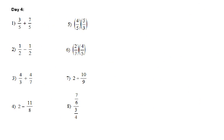Now let's take a look at day 4, those same types of problems. So those first two have common denominators, so 3 plus 7 gives us 10, divided by 5 gives us 2. The bottom, 1 half minus 1 half, whenever you subtract anything from itself, you get 0. You get 1 minus 1 is 0 over 2, which is 0.